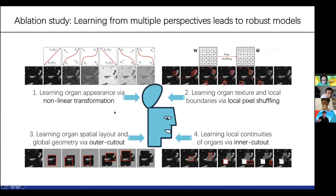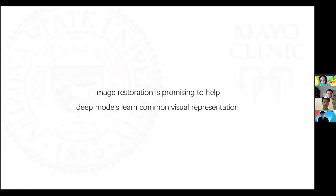To review our full framework: the non-linear transformation allows the model to learn organ appearance; local pixel shuffling allows it to learn organ texture and local boundaries; outer cutout teaches spatial layout and global geometry; and inner cutout teaches local continuity. Each has a specific perspective, and together they lead to a really robust pre-trained model. The take-home message is that image restoration is a promising approach to help the deep model learn generic image representation.